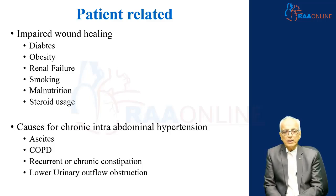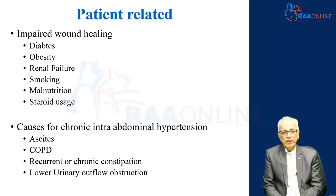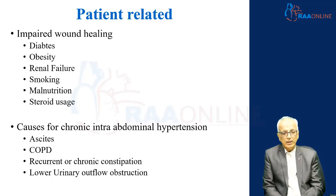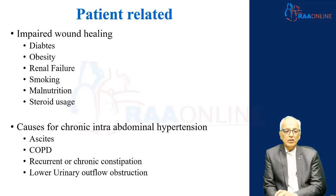Any cause for increased chronic intra-abdominal pressure, in the form of ascites, COPD, recurrent or chronic constipation, or lower urinary outflow obstruction where the patient has to strain to pass urine, can also lead to incisional hernias.